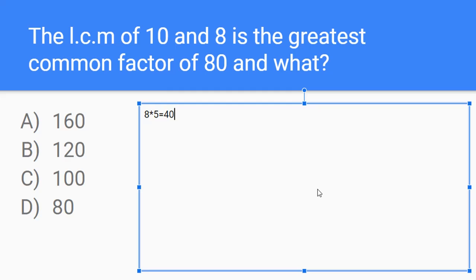We have to find out 40 is the greatest common factor of 80 and what? So we can try 160, but if you notice, for 160, 80 can go into 80, and 80 can go into 160 twice, too. So our greatest common factor would be 80.